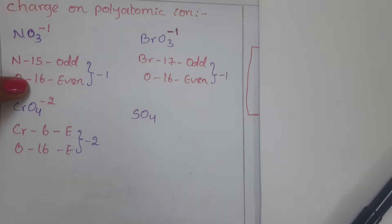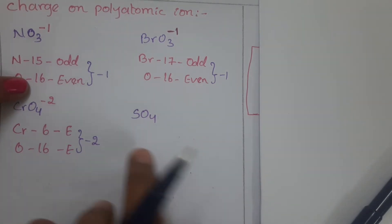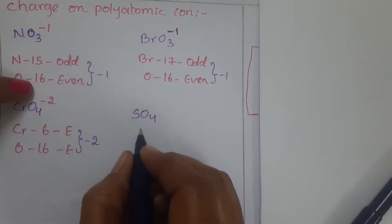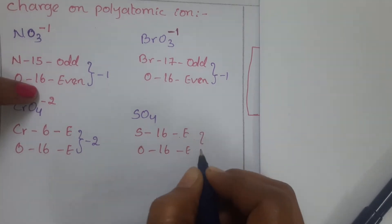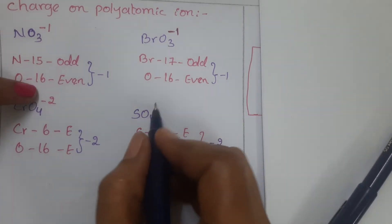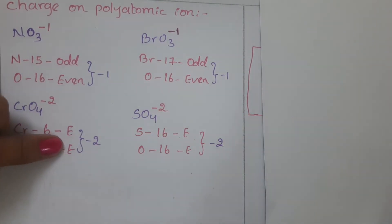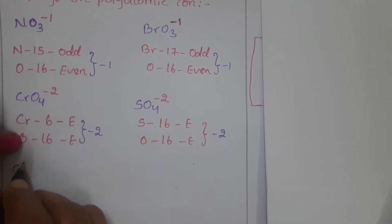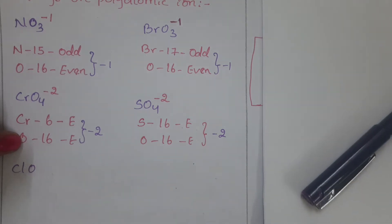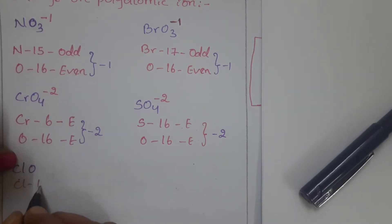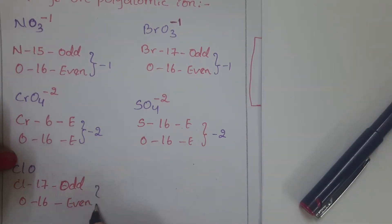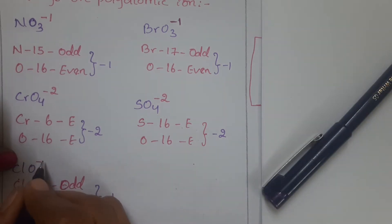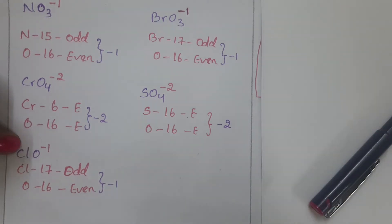Take SO4, the sulfate ion. Sulfur belongs to the 16th group and oxygen also belongs to the 16th group — both even numbers. So SO4 carries minus 2 charge. Next, take ClO. Chlorine belongs to the 17th group — odd number — and oxygen belongs to the 16th group — even number. Odd and even means minus 1, so ClO carries a minus 1 charge.